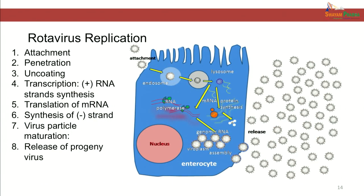Coming to replication of rotavirus: rotavirus is an RNA virus which replicates in the cytoplasm. Replication begins with attachment, which occurs by means of VP7 and VP4 antigens, followed by penetration and uncoating. First there is transcription of RNA for synthesis of positive strand, resulting in synthesis of mRNA. The mRNA gets translated into proteins and is also transcribed for synthesis of negative and positive strands. This is followed by maturation — formation of double-stranded RNA molecules — and assembly in the cytoplasm, subsequently followed by release of virus particles.